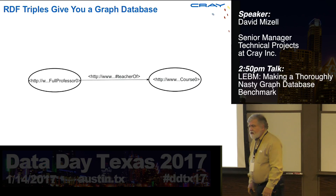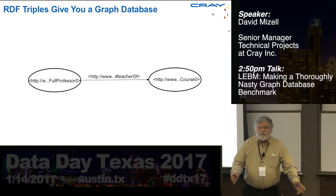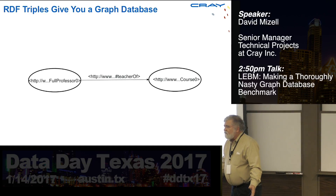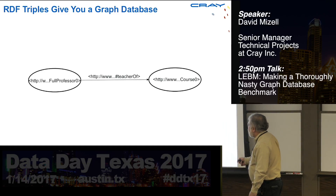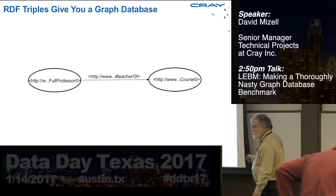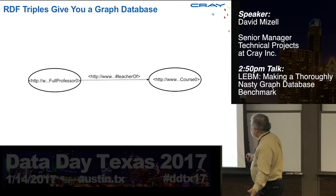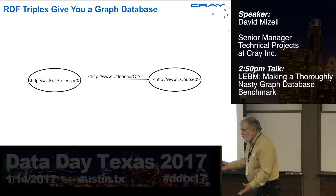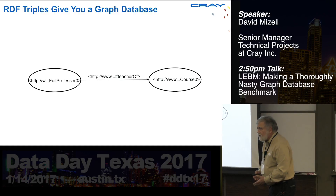If you squint at them just right, you notice that when you're creating these triple strings, you're also creating part of a graph. You can think of the subject as a vertex, the predicate as a label on a directed edge, and the object as the destination vertex. Here's that same fact — Professor zero teaches course zero — represented as a subject-edge-object triple out of a graph-oriented database.